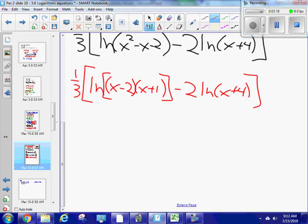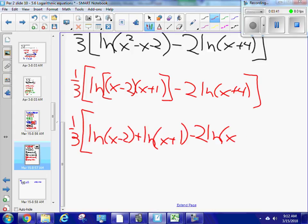...I have to use the top property to expand this piece here. So I have one-third ln x minus 2 plus ln x plus 1 minus 2 ln x plus 4. Let's stop it.